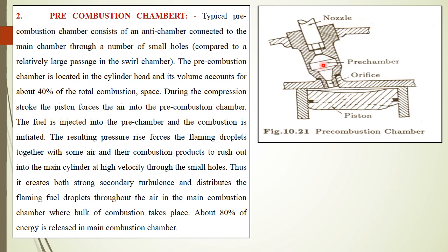The pre-combustion chamber is located in the cylinder head. This anti-chamber or pre-chamber accounts for about 40 percent of total combustion space. So 40 percent of the total combustion space is accounted for by the pre-chamber. During the compression stroke, as the piston moves from BDC to TDC, air is forced into the pre-combustion chamber through these small openings or passages.